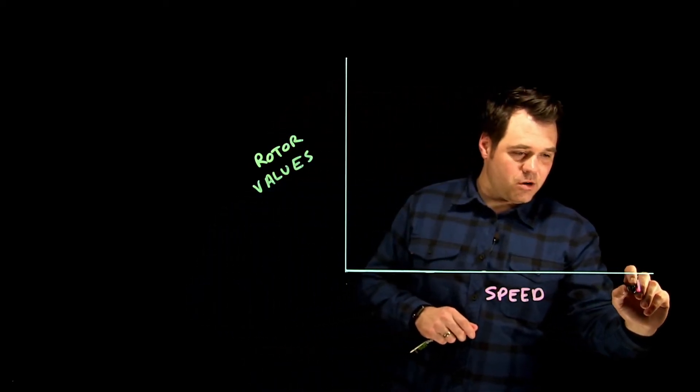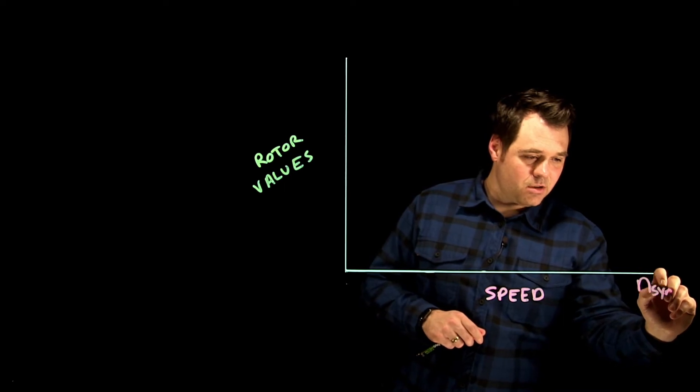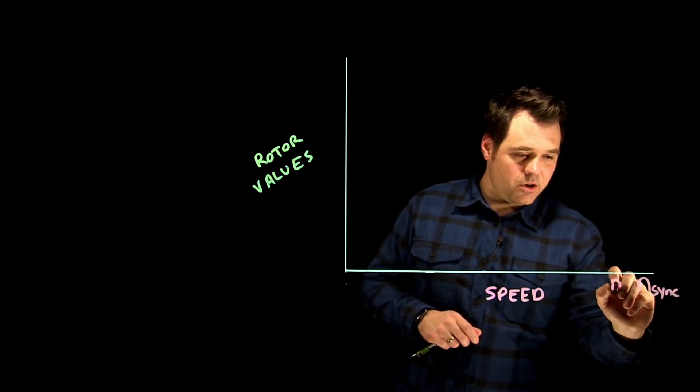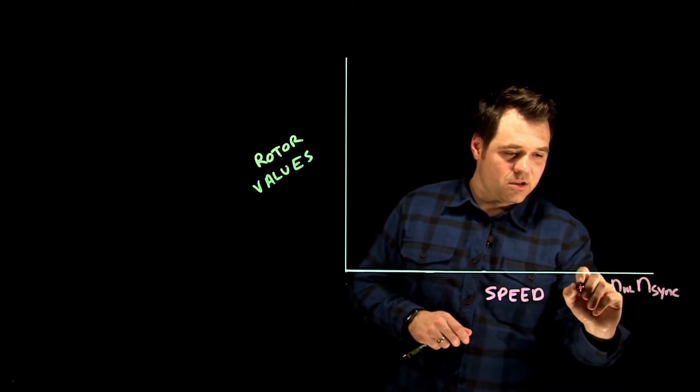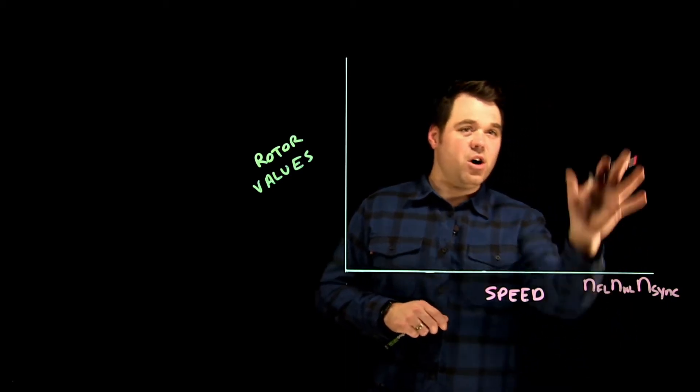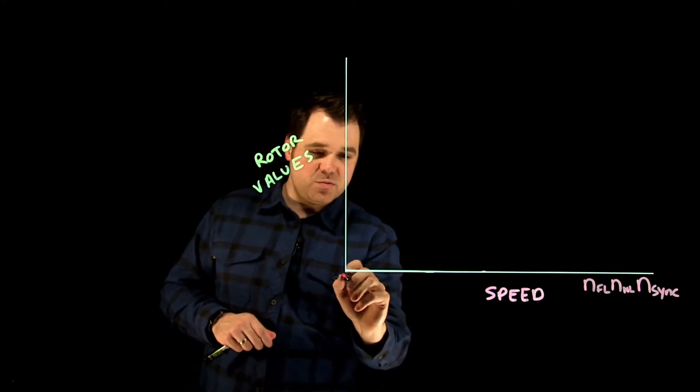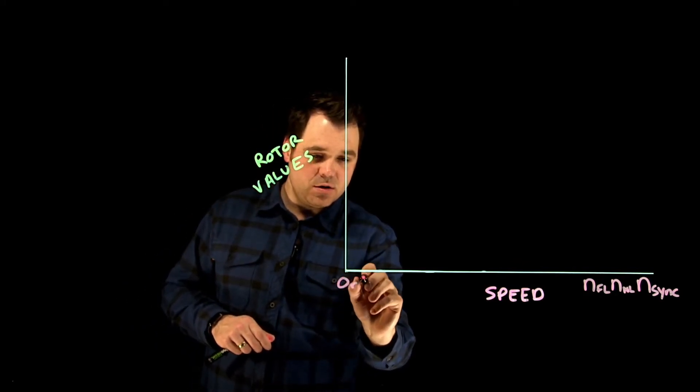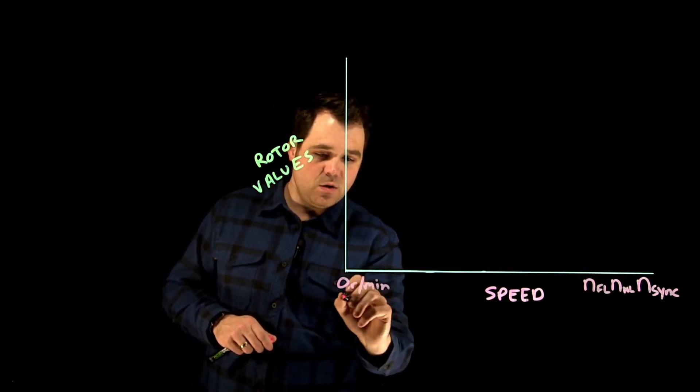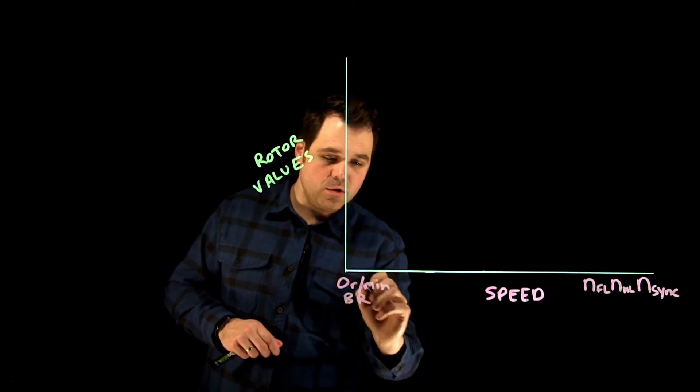So over here, this would be matching sync speed. Here would be no load speed. And here would be full load speed, all of it occurring right down here. And then all the way back over here, this would be zero RPM, or a blocked rotor condition. So that's one way to look at it.